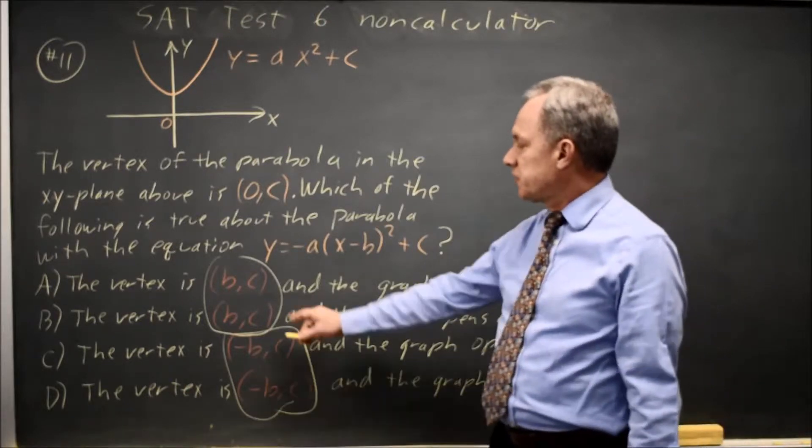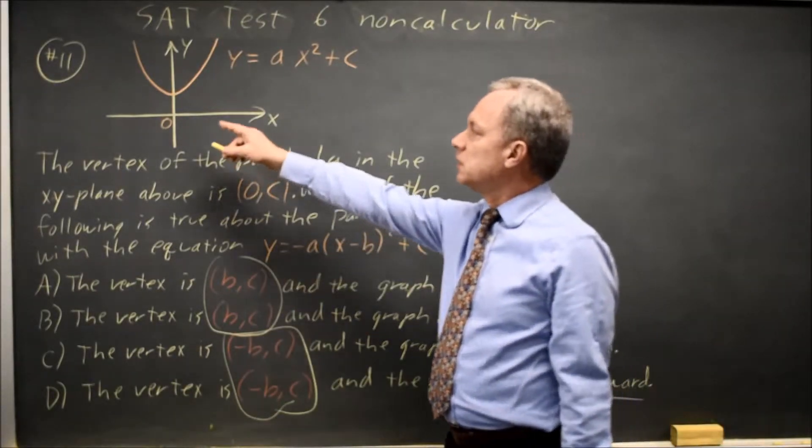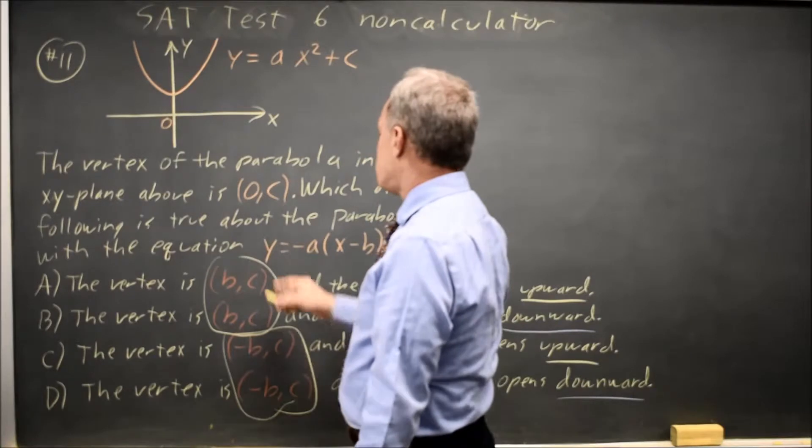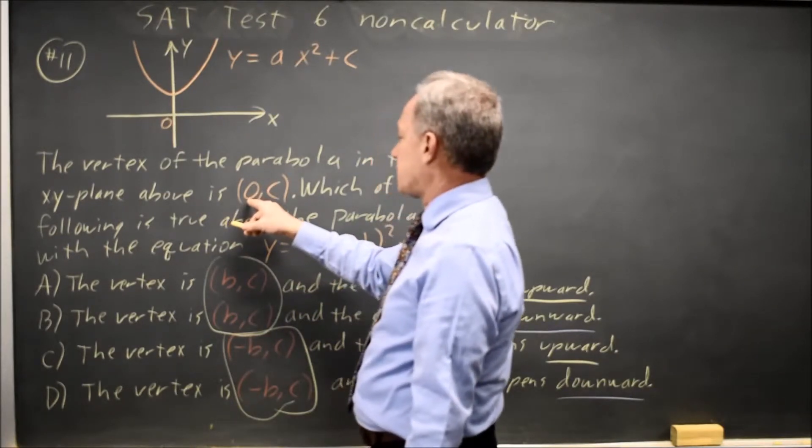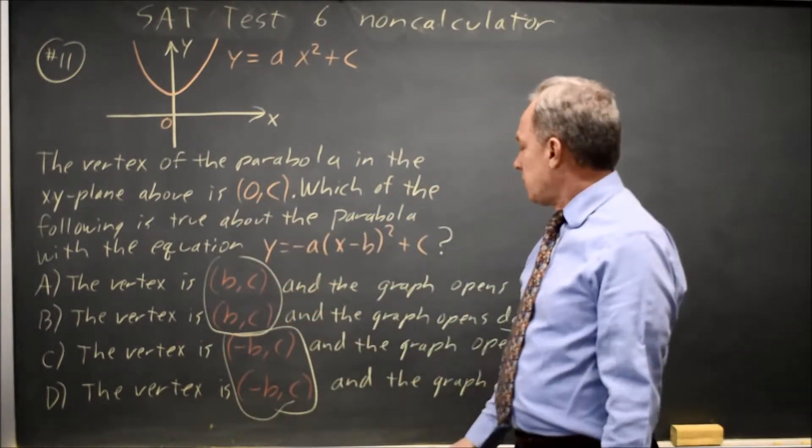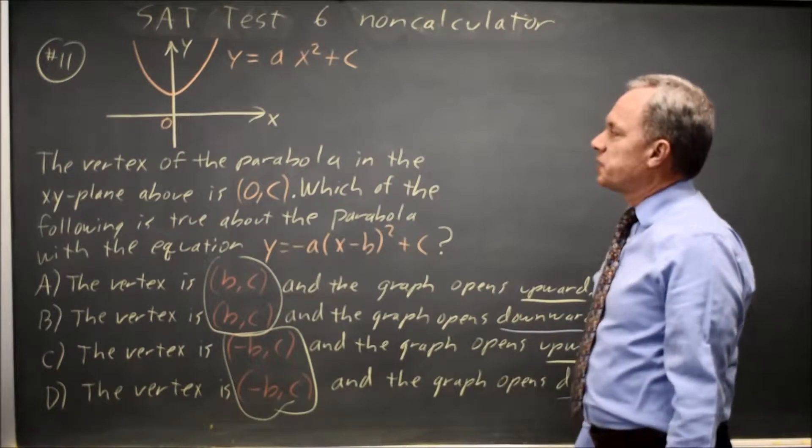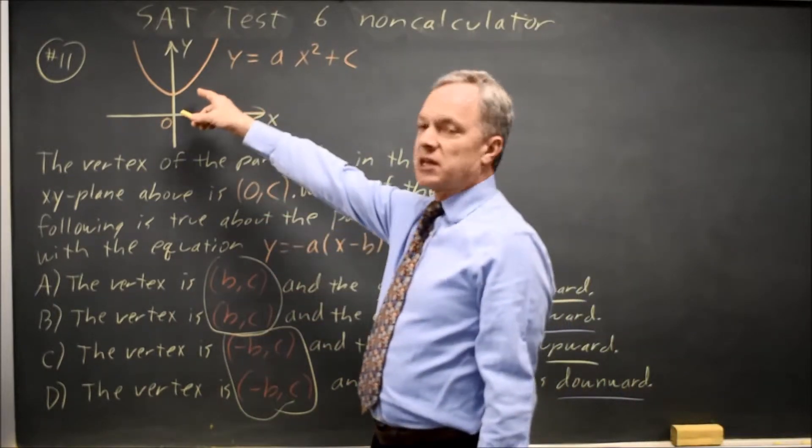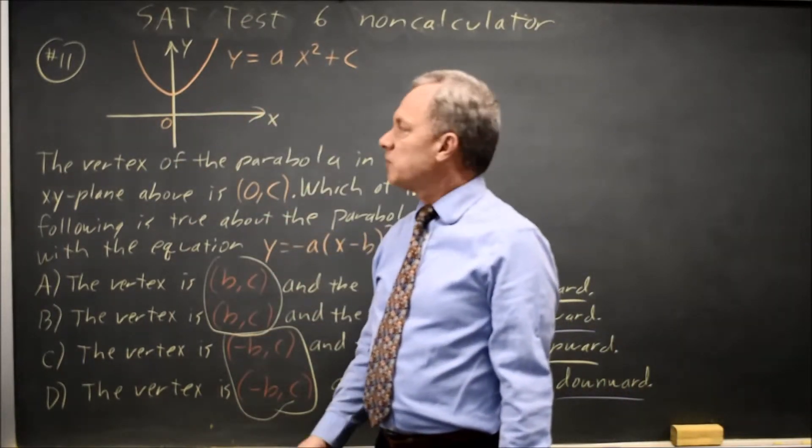If we can identify whether the vertex moves left or right from this equation with vertex at the origin, they told us the x-coordinate vertex is 0, and whether the graph opens up or down, when they told us y equals ax squared opens up, that will tell us the answer.